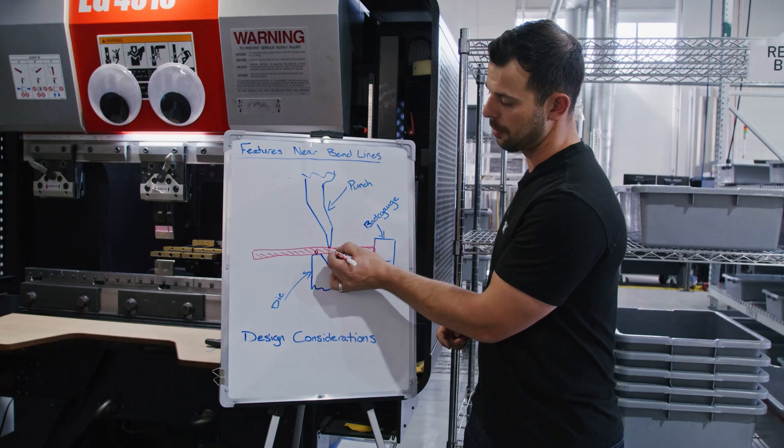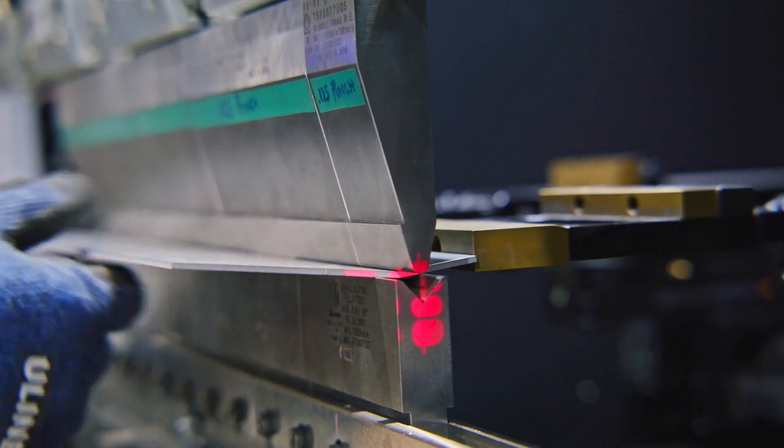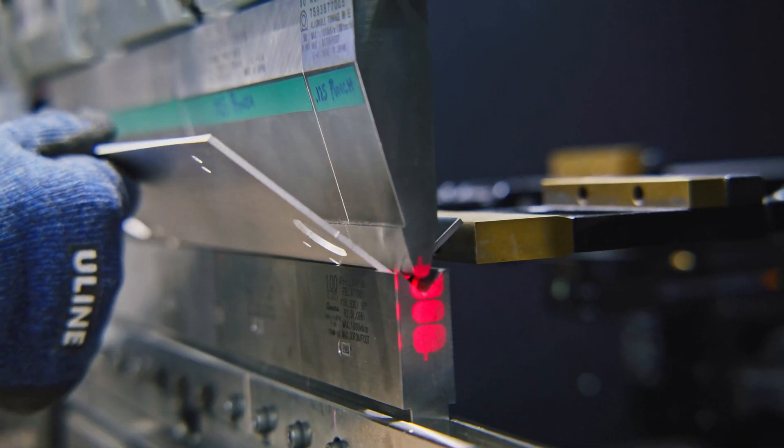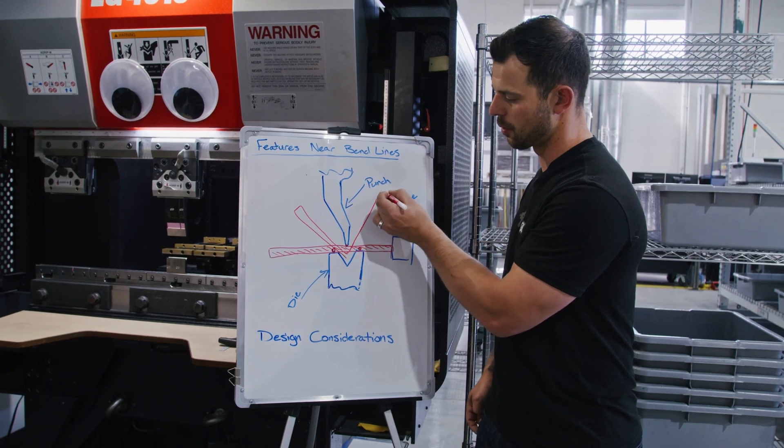As this punch comes down and presses this in, this material is going to start bending, and we're going to end up folding the material down into this pocket here. So we're going to have a little radius there, right? So we don't have square corners in our bends.